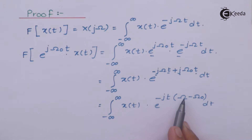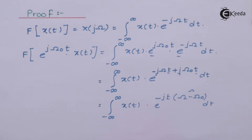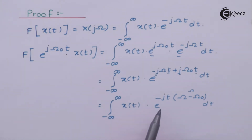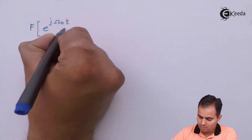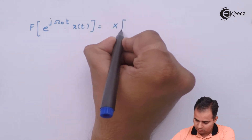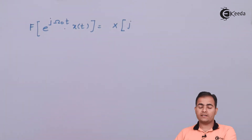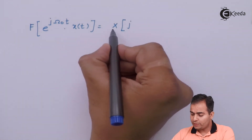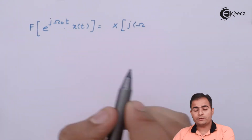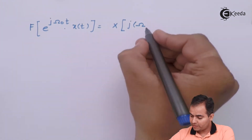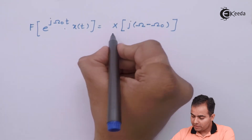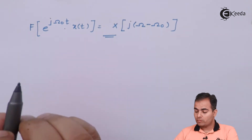So I will get e^(−jt(ω − ω₀)) inside the bracket. If I consider (ω − ω₀) as my ω, then I can say that x(t) · e^(−jωt) · dt is nothing but the definition of Fourier transform. According to the definition, this equals X(j(ω − ω₀)), which is the proof of the frequency shifting property.